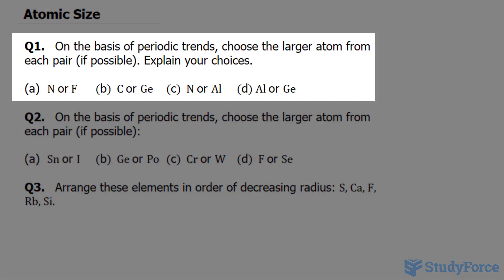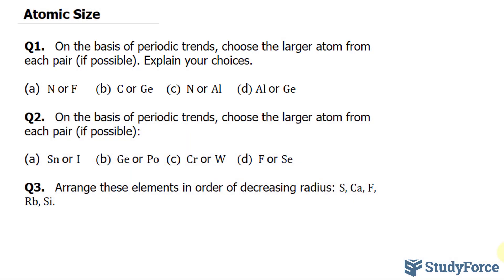Question one reads, on the basis of periodic trends, choose the larger atom from each pair. So we have four separate examples and we'll start with A.